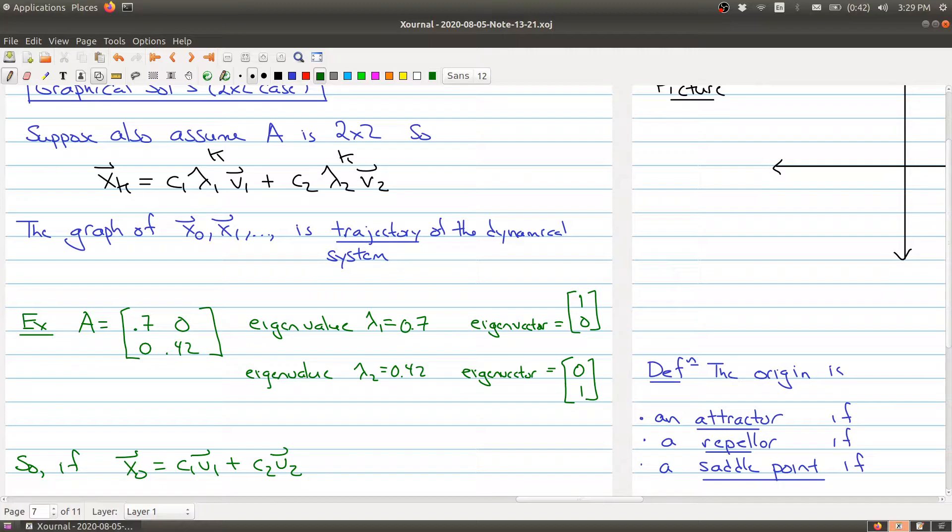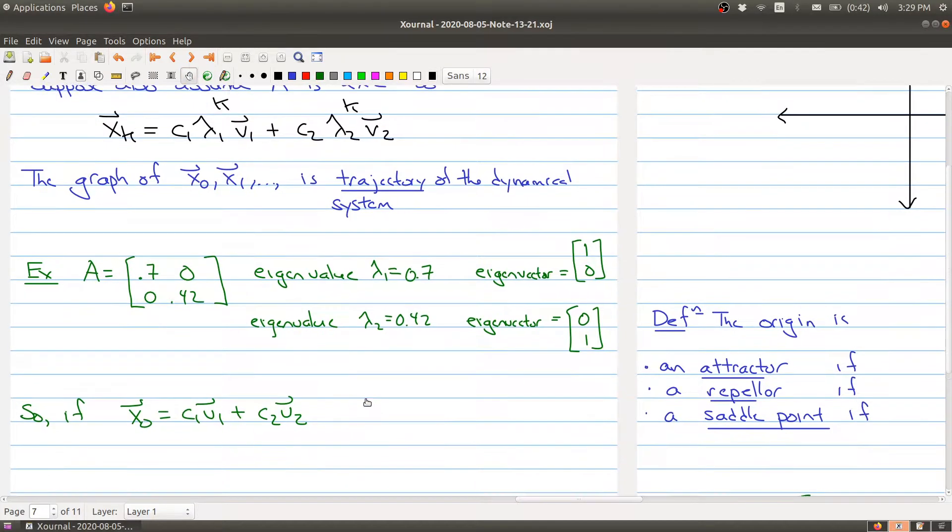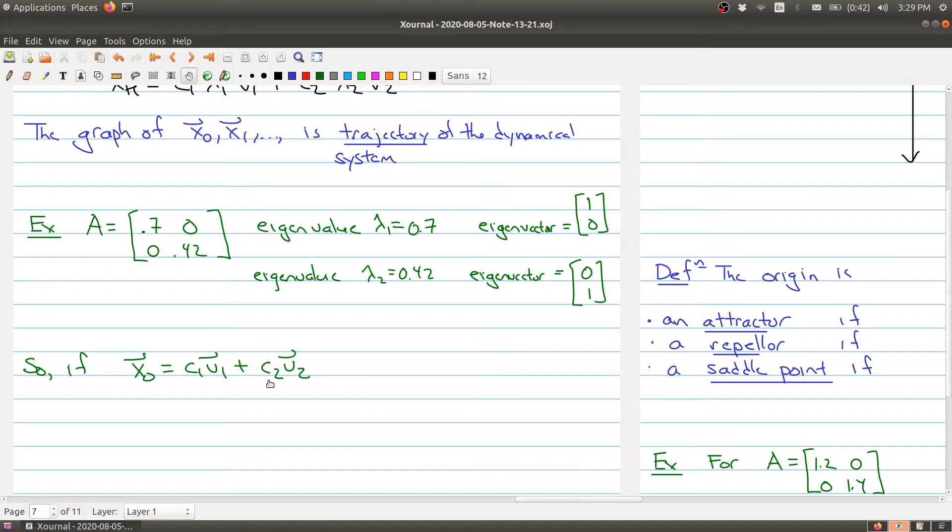So that's the eigenvalue and the eigenvector. And the point is now that if you take any X naught and you write it in terms of your basis, what we have is that we can actually figure out what the kth term is in terms of this trajectory. So the kth term is c1 times 0.7 to the k times the vector [1, 0], plus c2 times 0.42 to the k times [0, 1]. And now because both of these eigenvalues are strictly less than 1, as we raise the power of k, they're both going to go to 0.